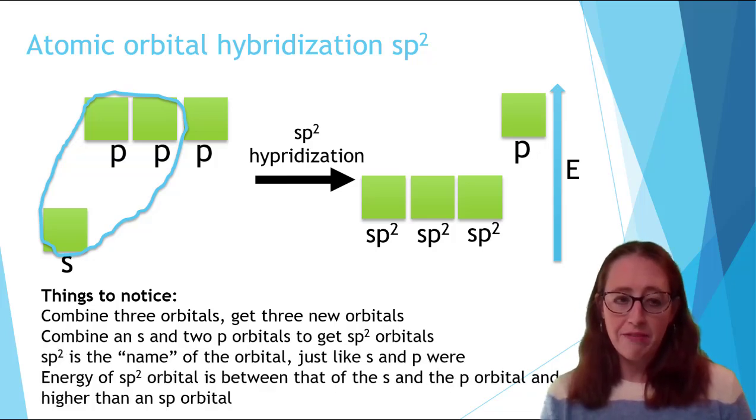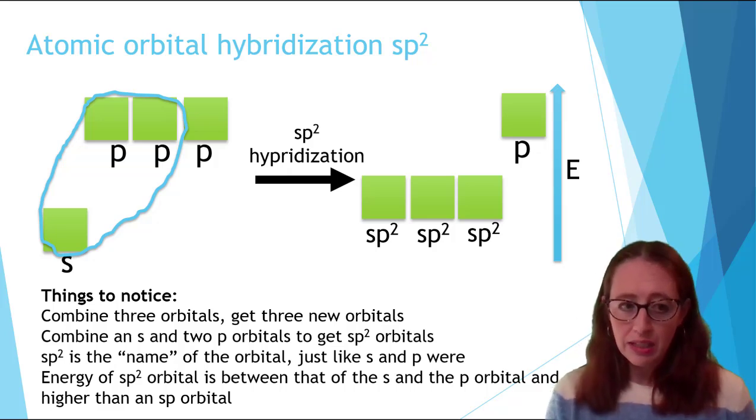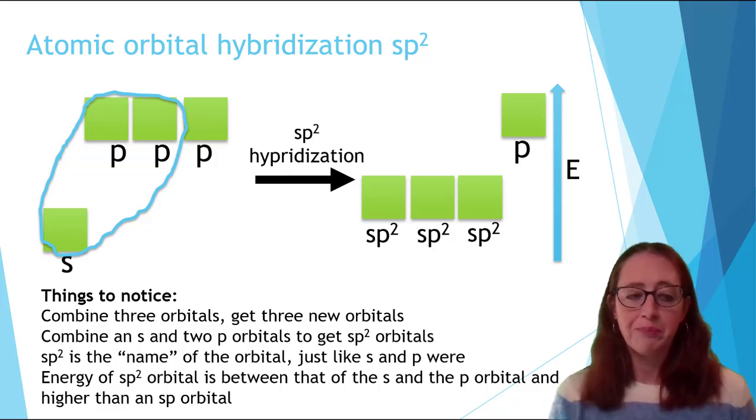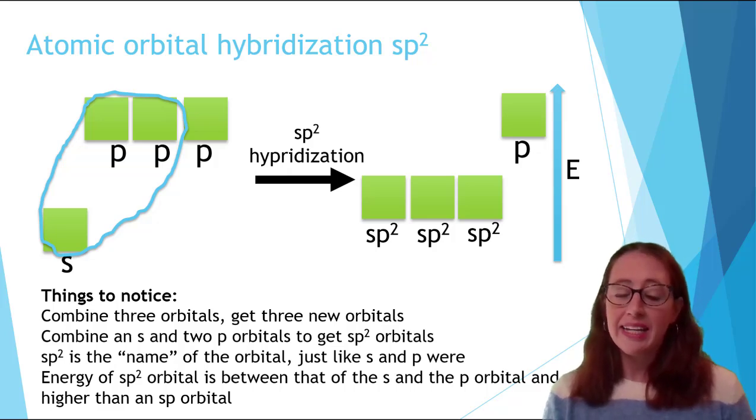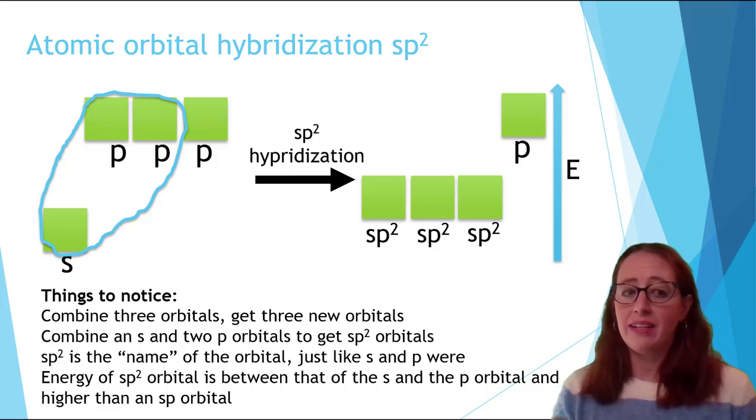So we have very similar things to notice here. Combine three orbitals, get three new orbitals. Combine an S and two P's, get SP2 orbitals. SP2 is the name of each orbital, just like S and P were before. The energy of the SP2 orbital is between that of the S and the P orbitals. And it's also not on this picture, but note it's also higher than an SP orbital.